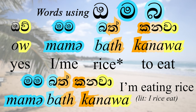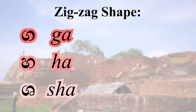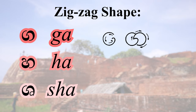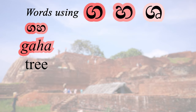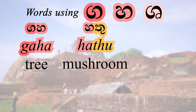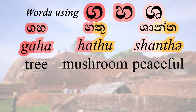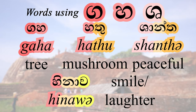In this group, letters are zigzags. We have G, H, and SH like in 'wish'. G is very basic, composed of a clockwise and a counterclockwise half circle. H starts with a little circle and follows suit. SH is the same as G but with a little circle at the end — like a tail between its legs, as if ashamed. 'G, H' means tree. 'H' means mushroom. 'Chante' means peaceful. SH is not part of the pure Sinhala alphabet, but it still appears in quite a few words. 'Hinave' is the verb to smile — words ending in 'nava' are always verbs.